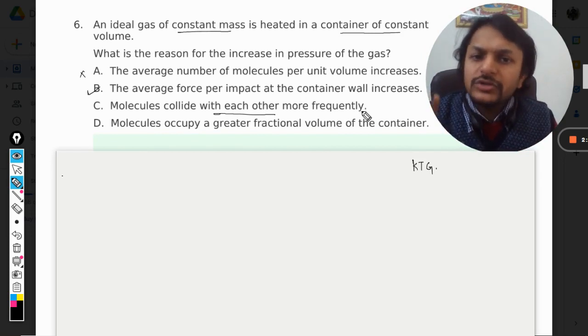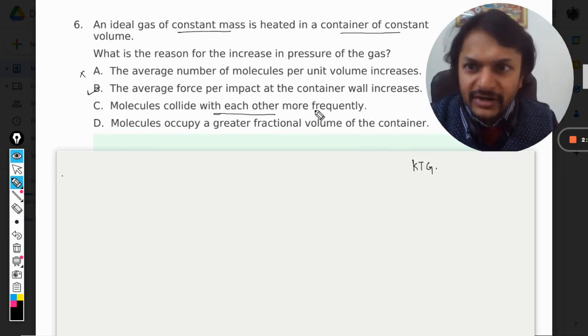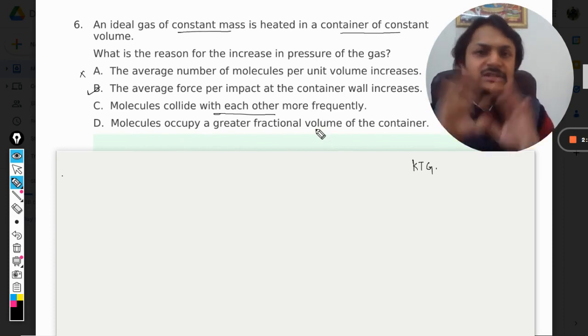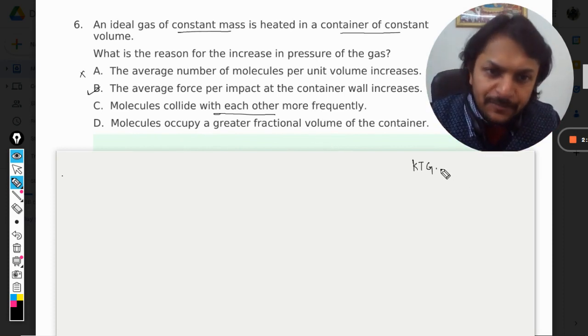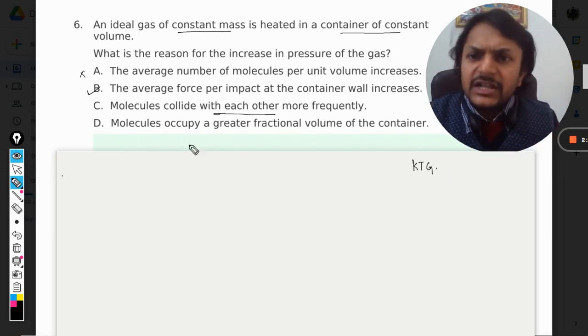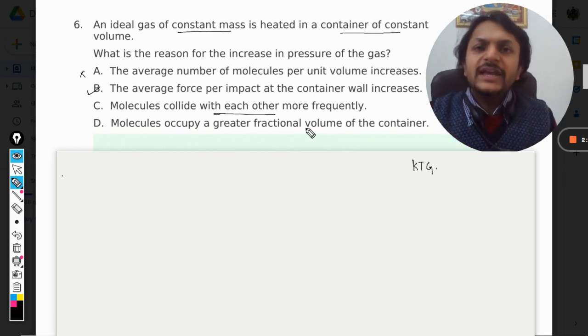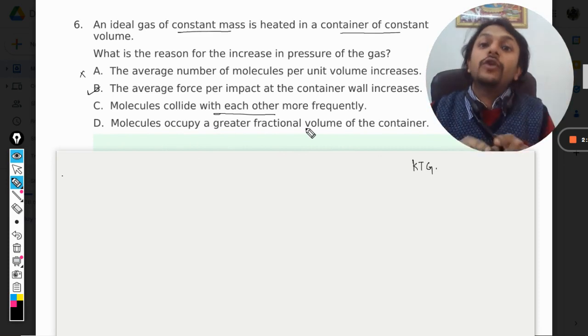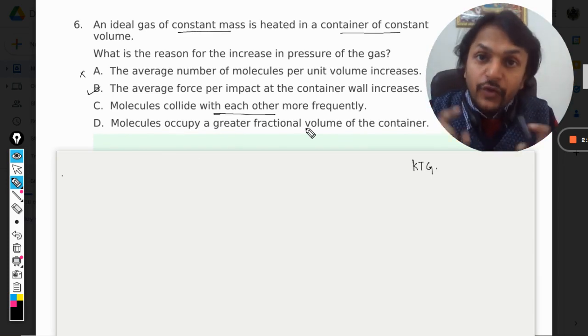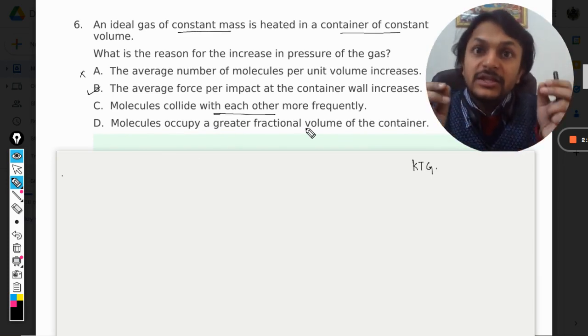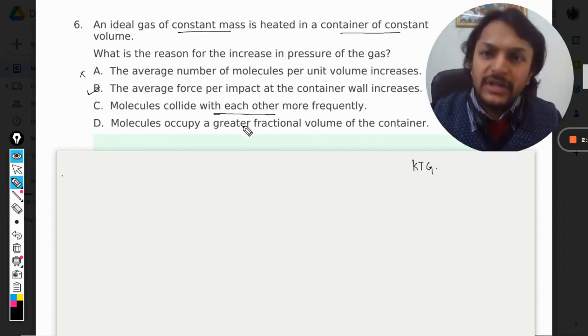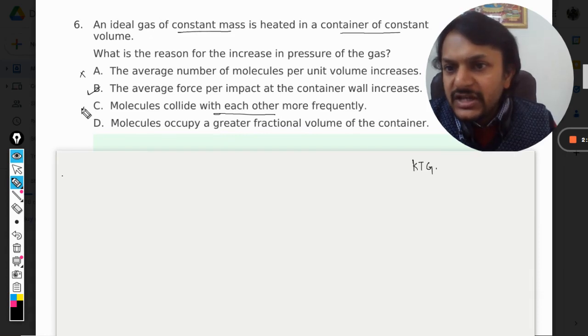If they're colliding with each other doesn't matter, but although this statement is true, the answer is not right. Molecules occupy a greater fractional volume of the container - this doesn't make any sense. According to the assumptions in KTG, the volume occupied by the molecules is very, very tiny compared to the total volume of the chamber. So C and D are also wrong, and hence B is the right answer.